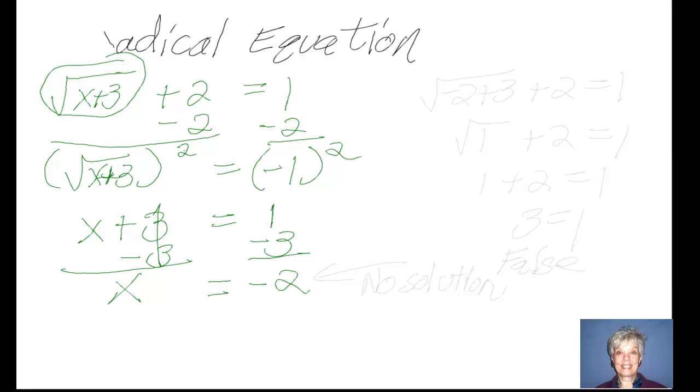Let's see. I'm going to check my answer because I don't really know when I'm going to get an extraneous answer. So let's go back into the original equation. The square root of negative 2 plus 3 plus 2 equals 1. The square root of 1 plus 2 equals 1. 1 plus 2 equals 1.